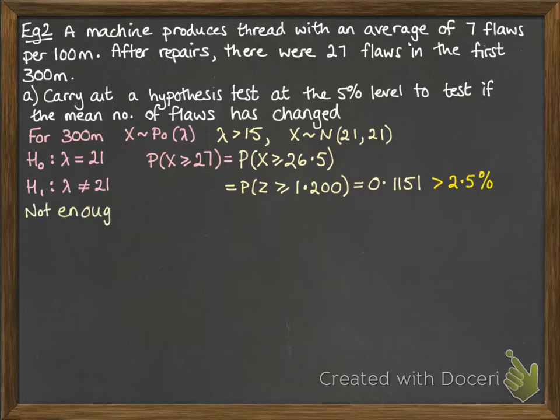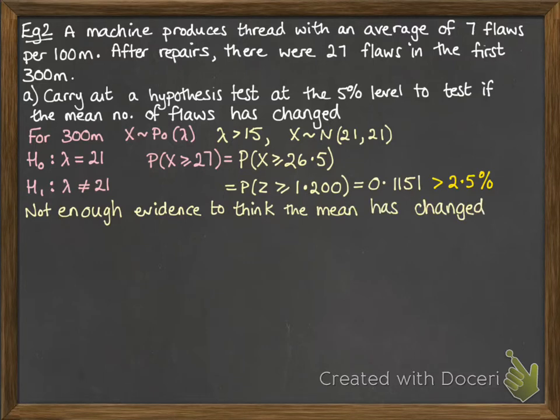Now we carry on those calculations, and we get the probability being 0.1151. This is more than 2.5%, so there's not enough evidence to think that the mean has changed. We're looking at 2.5% because this is a two-tailed test.